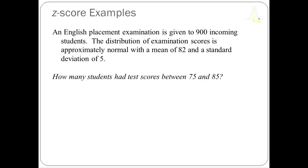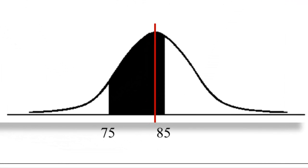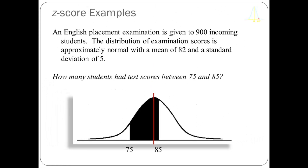This example is a little bit different. We have the same English placement exam, same mean, same standard deviation, but now I'm interested in how many students had test scores between 75 and 85. When I graph that out, you can see that the vertical red bar representing the mean of 82 falls in the middle of this range — between 75 and 85. I need to find the area of that dark region by solving for two Z-scores: one for 75 and one for 85, then add those two areas together.